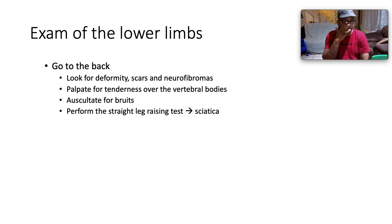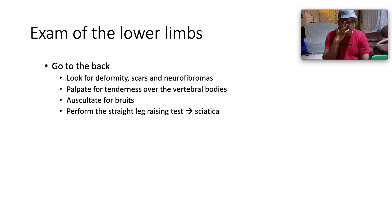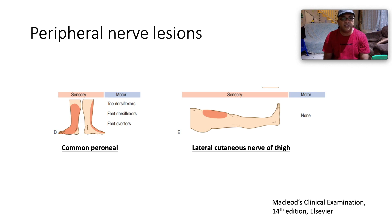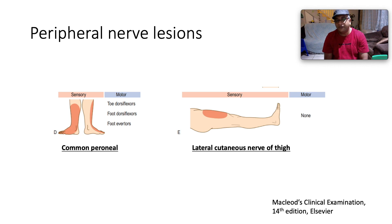Finally, go to the back and look for deformities, scars, and neurofibromas. Palpate for tenderness over the vertebral bodies, auscultate for bruits, and perform the straight leg raising test for sciatica. For peripheral nerve lesions in the lower limbs: the common peroneal nerve provides motor innervation for toe dorsiflexion, foot dorsiflexion, and eversion, with sensory supply to the lateral lower leg and dorsum of foot. The lateral cutaneous nerve of the thigh is purely sensory to the anterior thigh with no motor innervation.